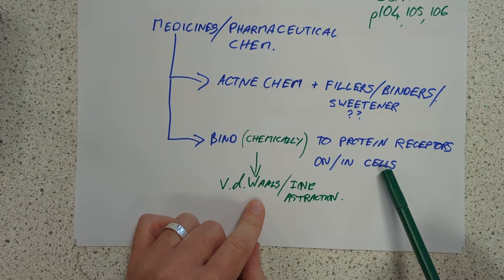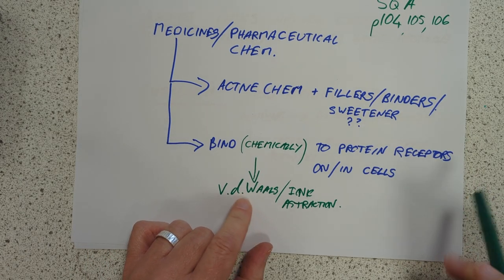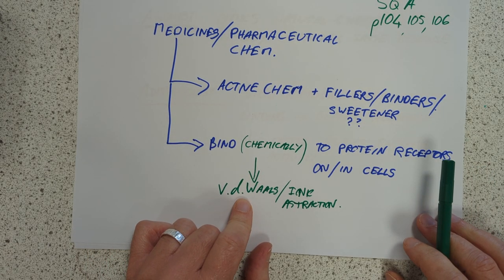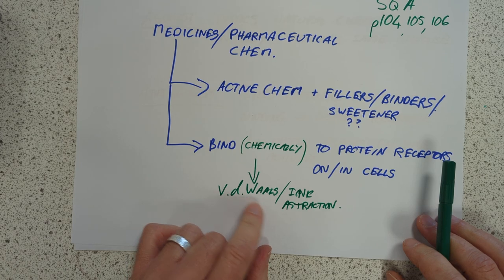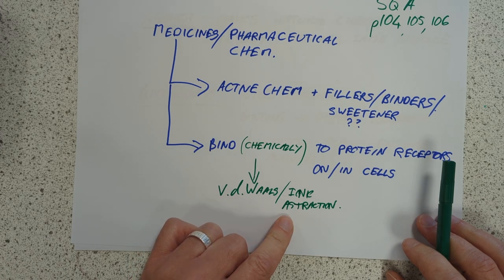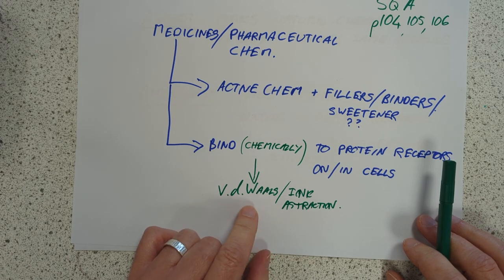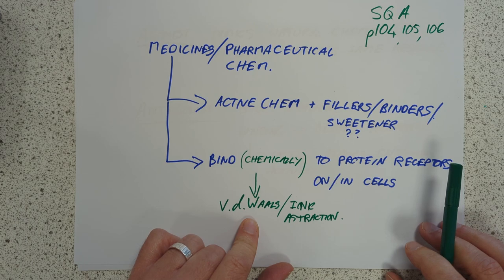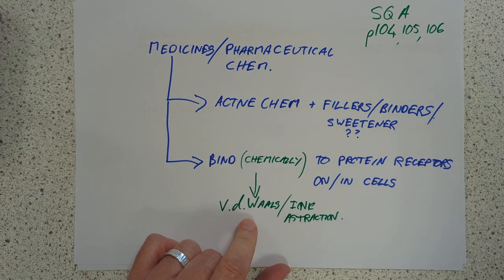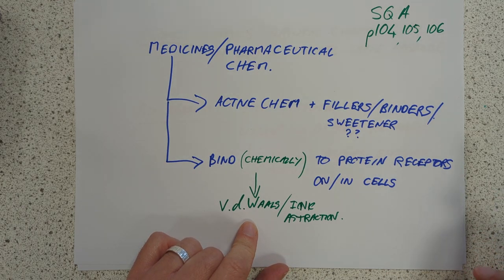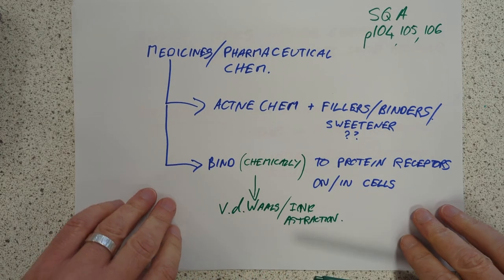They bind chemically to protein receptors on your cells or in your cells, in the case of enzymes. How does this chemical binding take place? Well, it can be van der Waals forces. It can be ionic attraction. A consequence of it being van der Waals is that the shape of the drug has to be just the right physical shape to bind to the protein site.